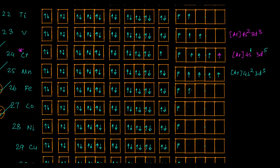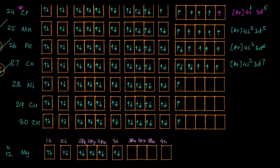The next electrons go in sequentially: Argon 4s² 3d⁶ for iron, Argon 4s² 3d⁷ for cobalt. This continues flipping through - 3d⁸ for nickel. Now we come to copper.